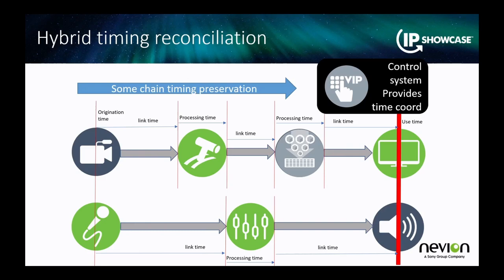The concept we're working on within the activity group is what I call a hybrid timing reconciliation. You're aware that potentially some elements of the chain may actually preserve some timing information. But fundamentally, to reconcile — for instance — a video time with its associated audio time, you have to do the accumulated math of the transit, processing time, and link times of the audio flow and do the same with the video flow. We're trying to develop system recommendations to allow a control system to automatically compute those offsets across all of the different media flows and actually allow it to reconcile.